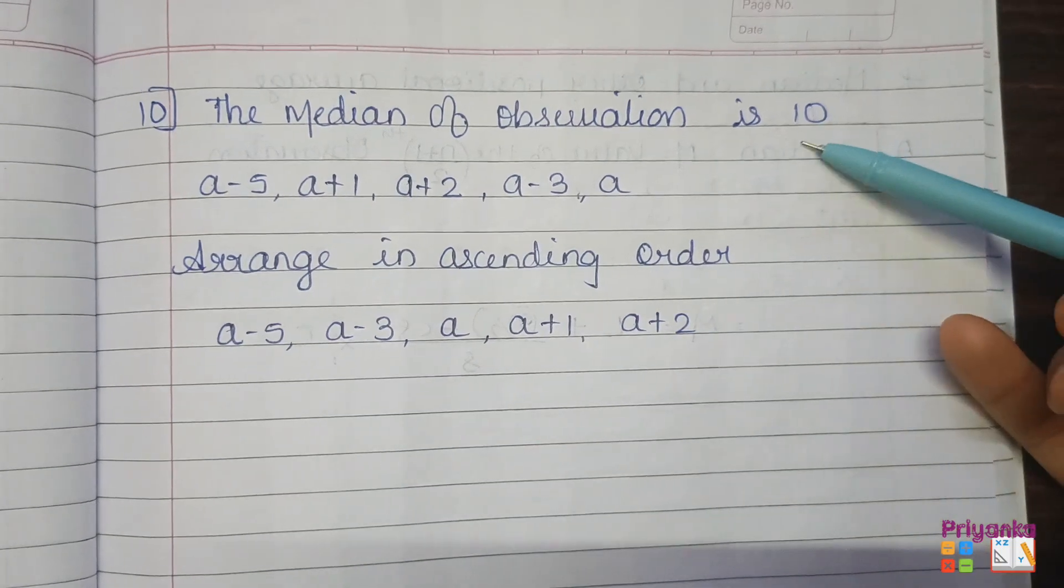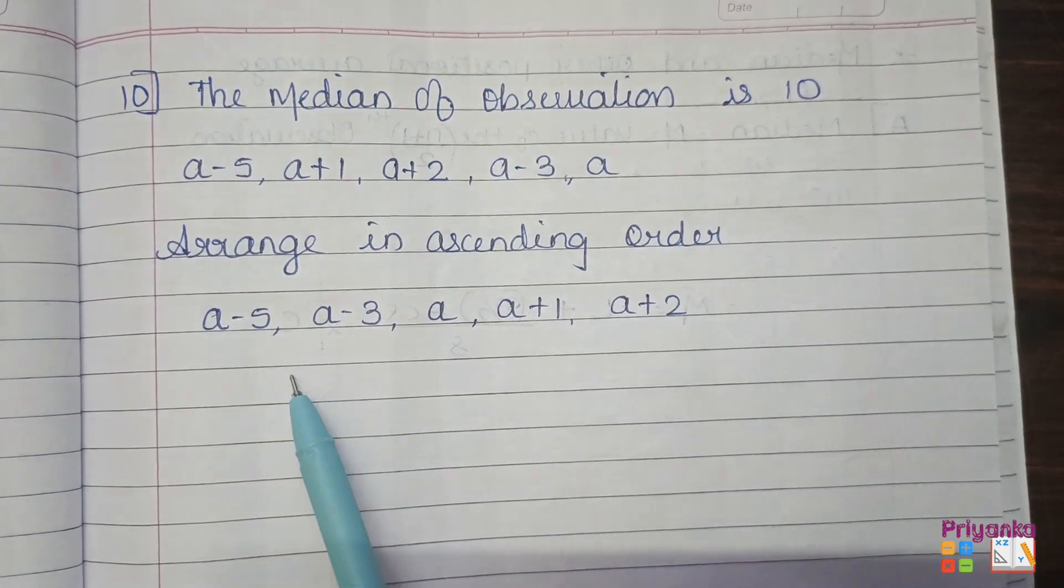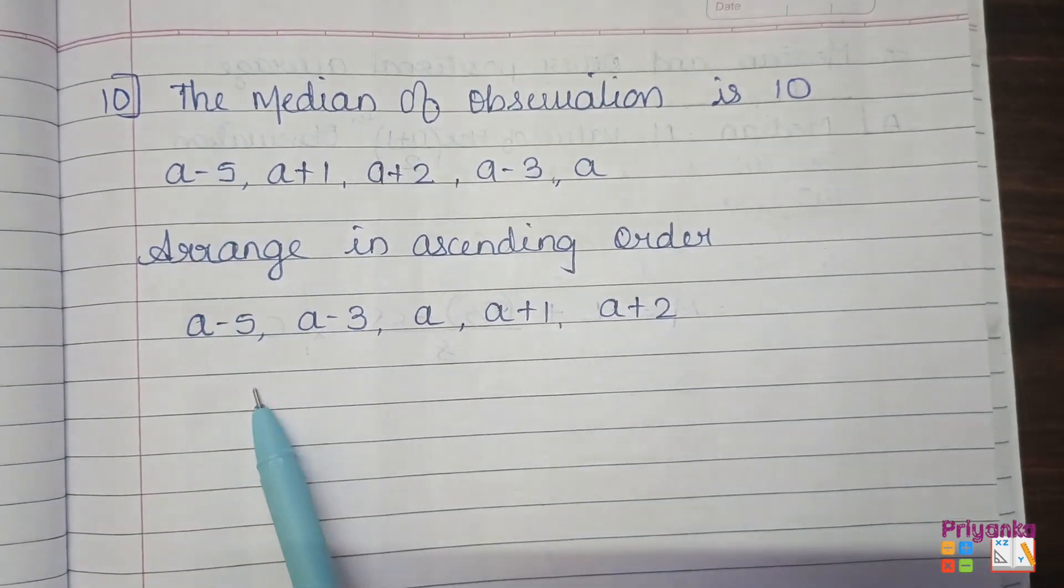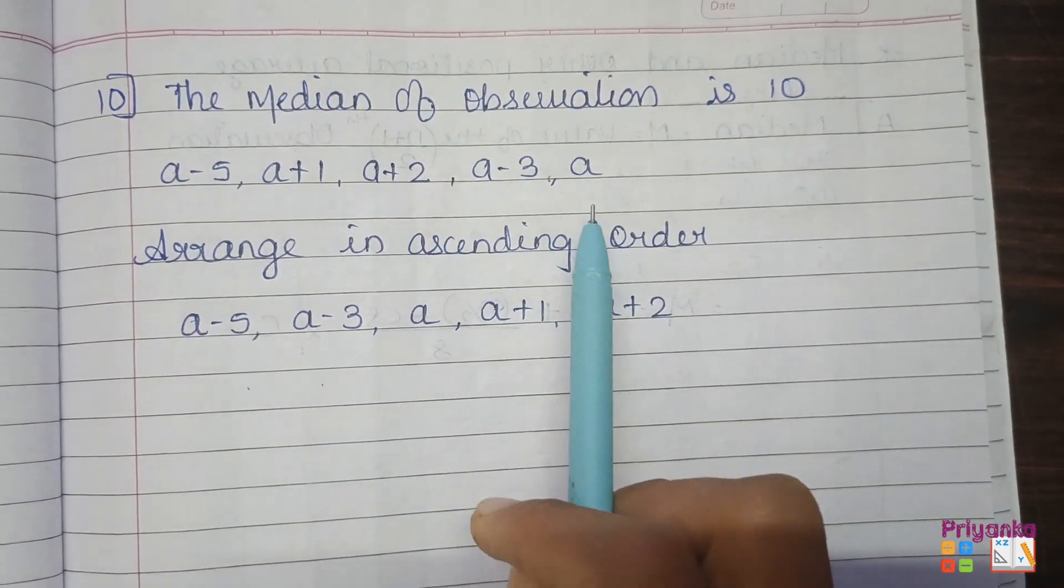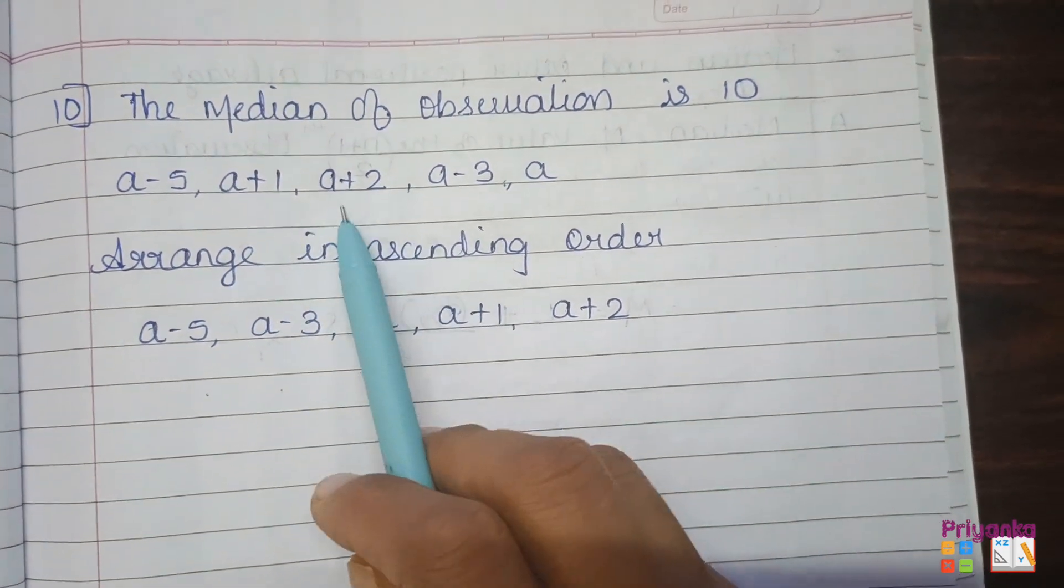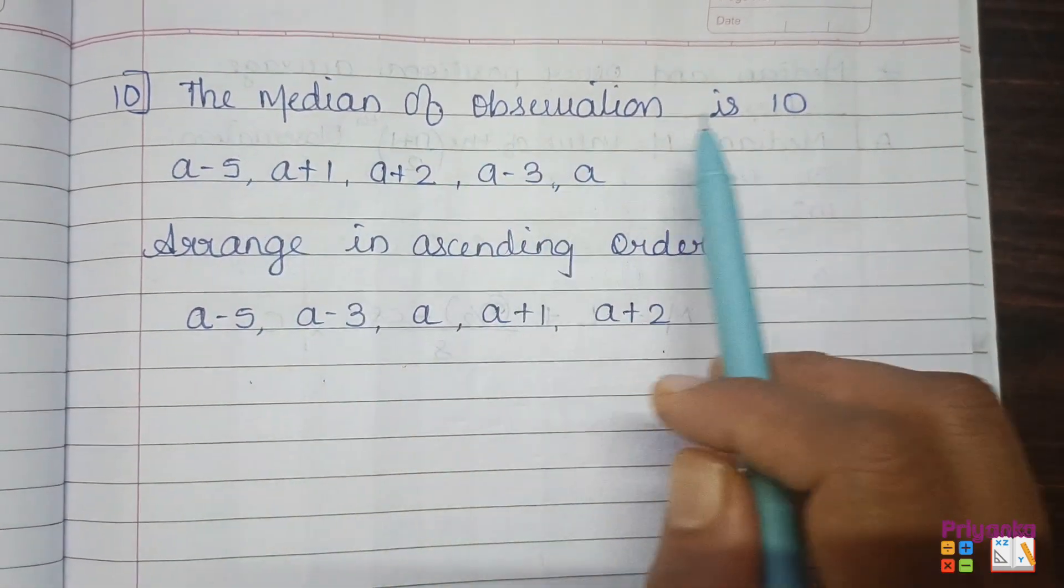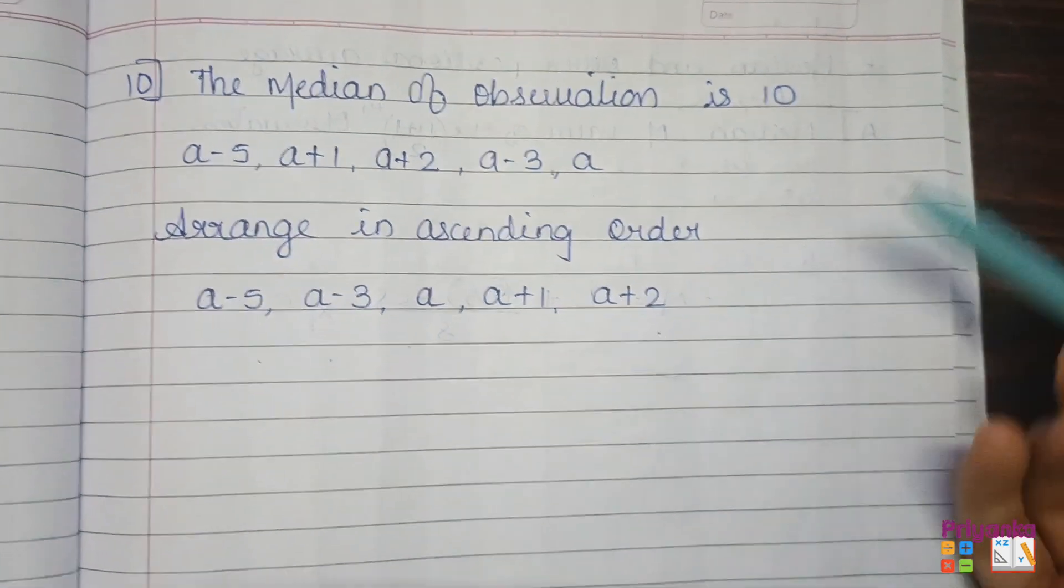These are the 5 observations and as we are finding median, first we will arrange them into ascending order. Here I took the question in the book and arranged in ascending order. a minus 5, then a minus 3, then a, then a plus 1, and a plus 2.